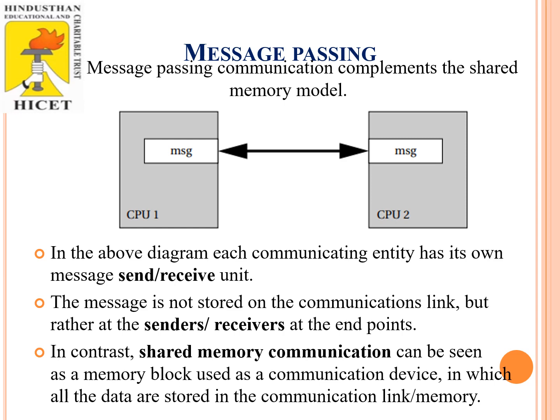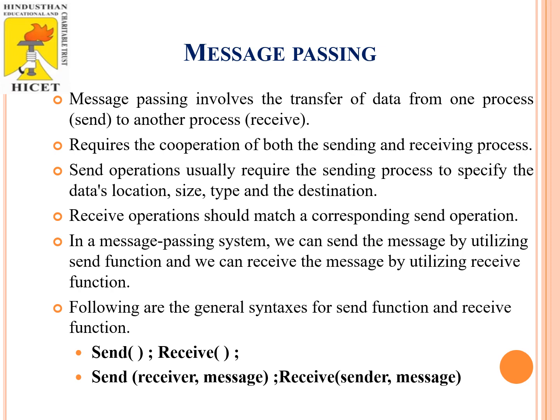The message passing involves the transfer of data from one process to another process. It requires the cooperation of both the sending and receiving processes. The send operations usually require the sending process to specify the data's location, size, type, and destination. For example, if a first processor wants to communicate to the second processor, it has to send information using the following syntax: 'send' and 'receive'. If process 1 wants to send information to process 2, it uses send with the receiver and the message. Similarly, once the receiver receives the information, it has to acknowledge the sender using receive, specifying which sender and some message. This is the proper syntax involved in message passing.